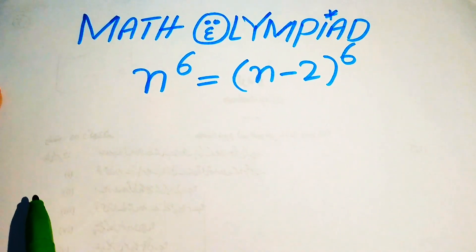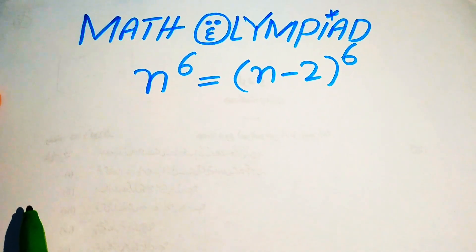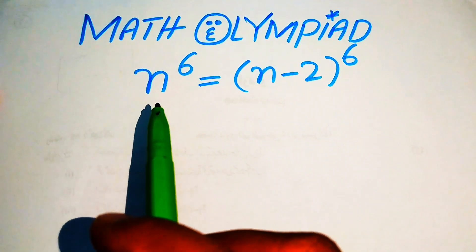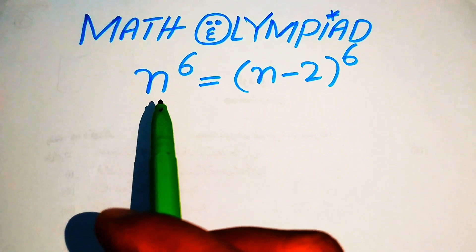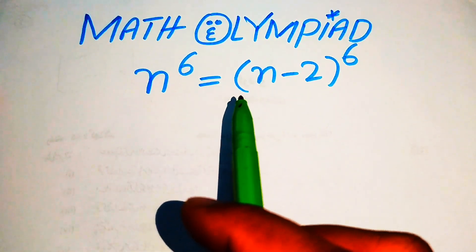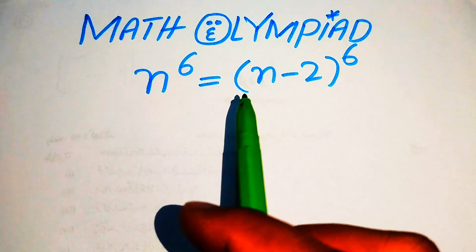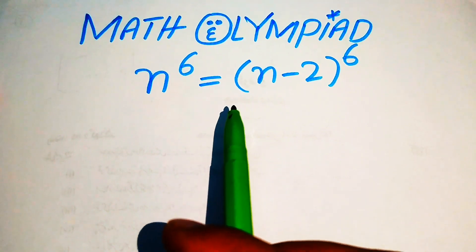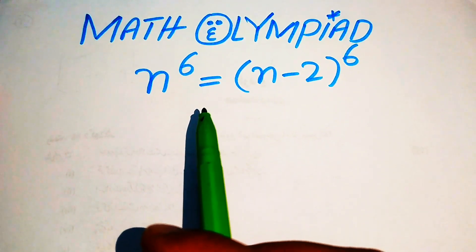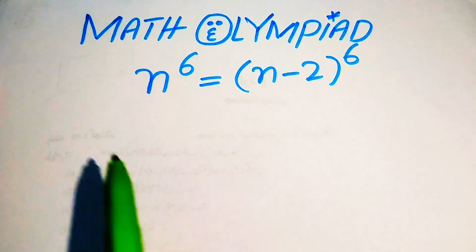Hello everyone, welcome. We solve this nice algebra problem where n to the power of 6 equals to n minus 2, the whole to the power of 6. Now we solve this problem for the values of n.